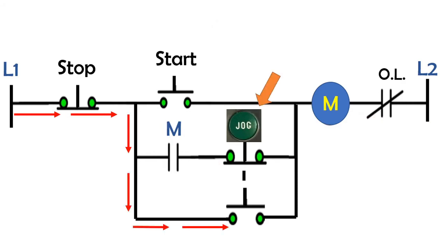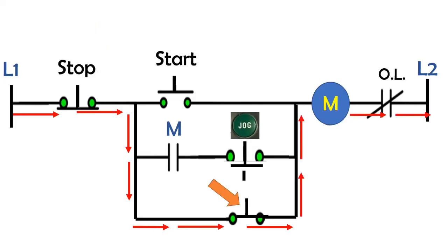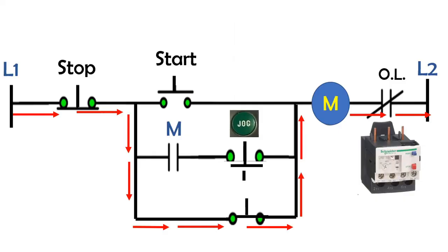When you press the jag push button, the current will flow from line 1 through stop push button, through the normally open push button that is held closed momentarily, through the magnetic contactor, overload relay, then back to line 2.